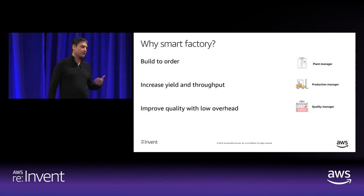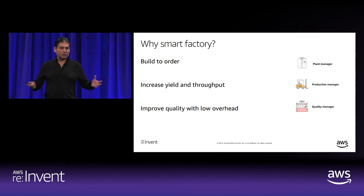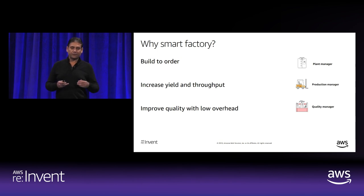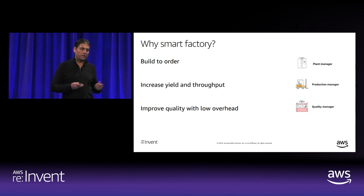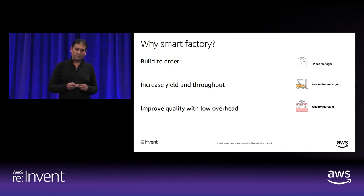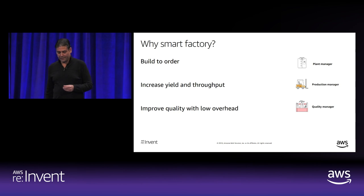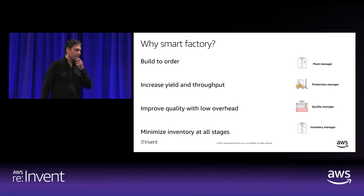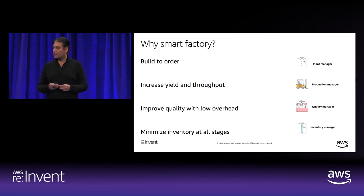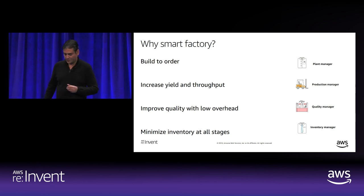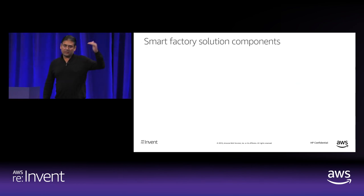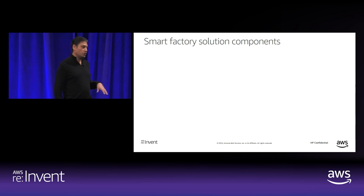For quality managers, we have to improve quality with low overhead. Different factory owners may have different drivers — one operation I talked to felt yield and throughput were fine and focused on improving quality across the assembly line. For inventory managers, we will minimize inventory at all stages — essentially better inventory forecasting using some of the recent AWS announcements.